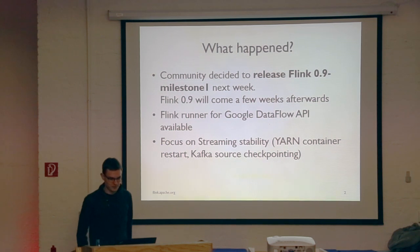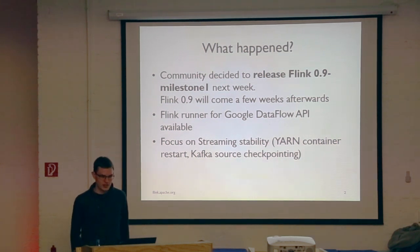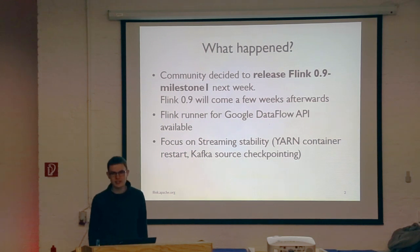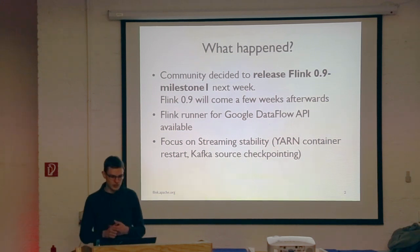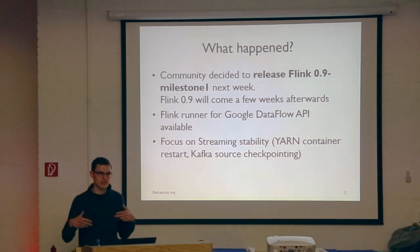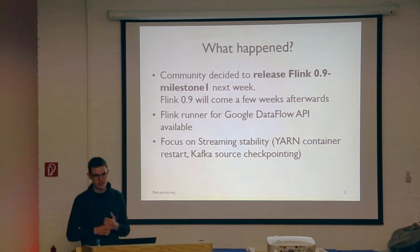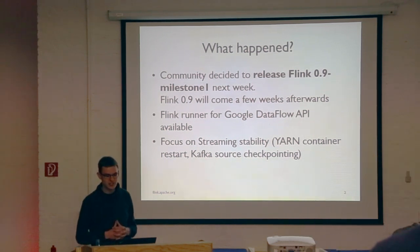So what happened in March? The community decided to release a 0.9 Milestone 1 version, hopefully next week. We do this because the 0.9 release will probably be the biggest release of Apache Flink so far, as it adds a lot of new modules and changes a lot of internals in the system. We want to get it out to users so you can easily test it and give us feedback. We will also announce this release at ApacheCon, which is happening in Texas.